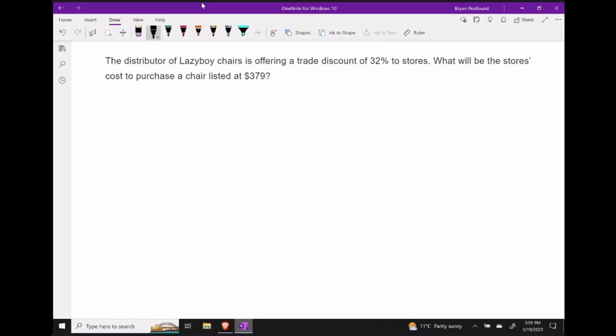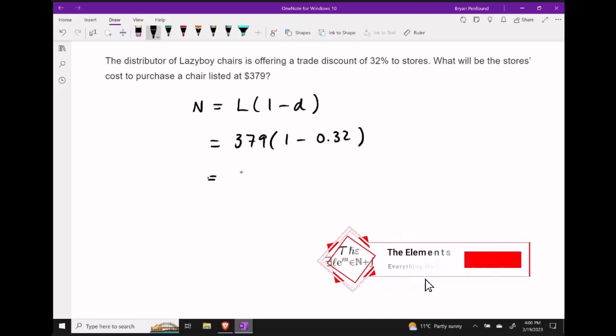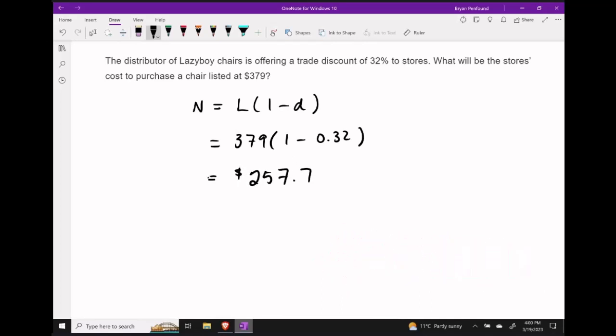We can apply the formula: net price equals the list price times one minus the discount. Since we know the list price is $379 and the discount is 32%, we can fill in that information. Putting this into our calculator gives us a final answer of $257.72.